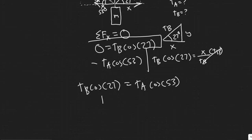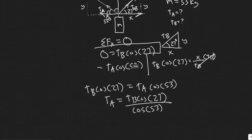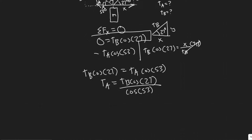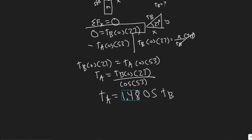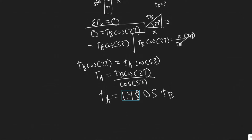Now we want to solve for one of them. I'm going to solve for T_A. So T_A equals T_B cos(27) divided by cos(53). Plugging this into the calculator — cos(27) divided by cos(53) — you get T_A equals 1.4805 T_B, so it's going to be approximately 1.48 times T_B. Now we're going to use this when we sum the forces in the y direction.